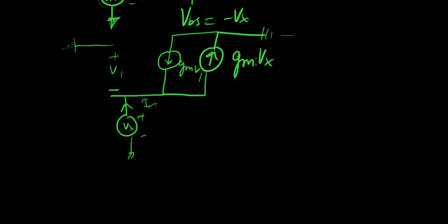Now that we have a GmVx for the current source here, it's pretty simple to see how this thing behaves. Basically, the magnitude of the current source depends on the voltage right across it. Like Vx is right across the current source here. Do you see that? It's basically this thing right here.